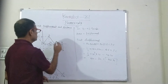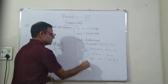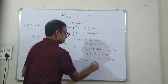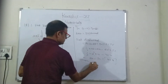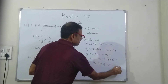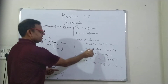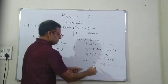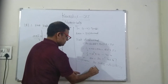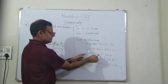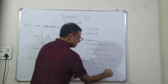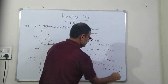Now for distance, total distance is this area plus this area: area of triangle OAB plus area of rectangle BCDE. The area of triangle OAB comes to be 40, and the area of rectangle BCDE is 4 into 20, which is 80. So total distance is 40 plus 80, that is equal to 120 meters.